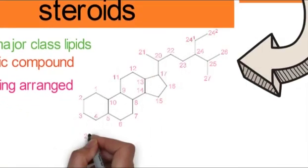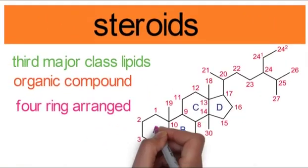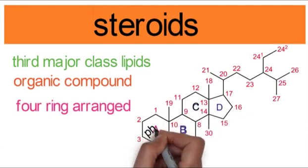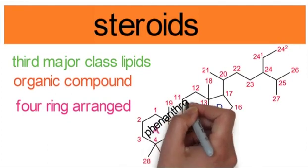In this structure, three cyclohexane rings which are A, B, and C are connected in the same way in the phenanthrene. A fused cyclopentane ring D is also present.